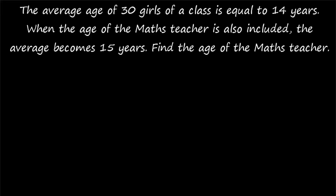Hi friends, welcome to today's class. Today's question is: the average age of 30 girls in a class is equal to 14 years. When the age of the math teacher is also included, the average becomes 15 years. Find the age of the math teacher. Welcome to the class for averages.